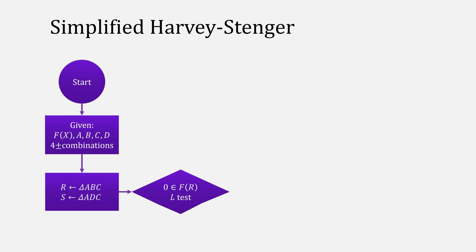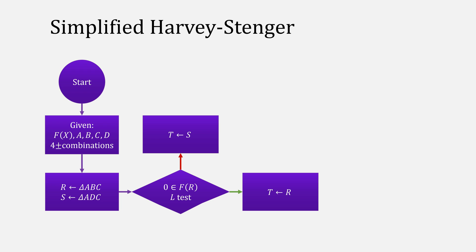Then we tested to see if our point was in our first triangle. In this case, I used the L test. If it was, we put R into T. If it wasn't, we put S into T.